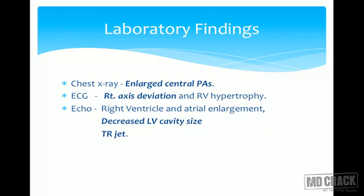Regarding laboratory findings: chest X-ray is most often normal but may show enlarged central pulmonary arteries. ECG will show right-sided axis deviation and right ventricular hypertrophy. Echo will show a decreased left ventricular cavity size, and because of increased right ventricular pressure, there will be tricuspid regurgitation (TR).